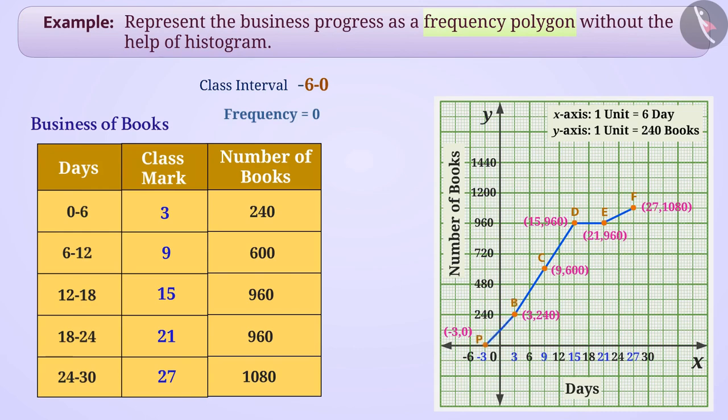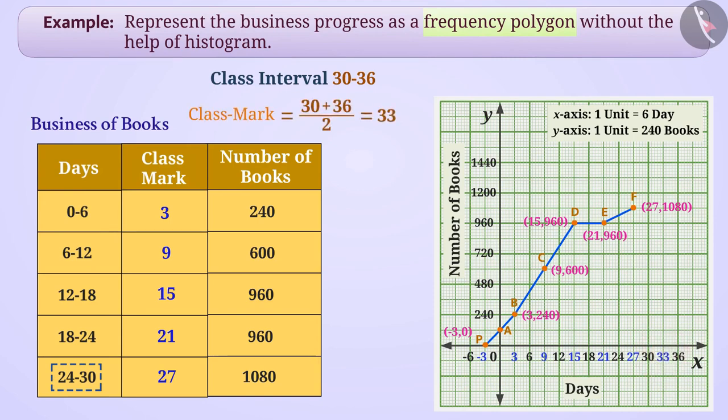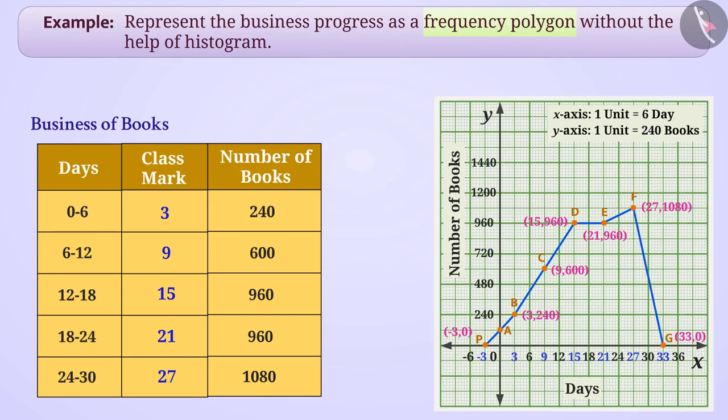This line segment intersects the y-axis at a point which we will call point A. Similarly, suppose that even after the class interval 24 to 30, the class interval with 0 frequency is 30 to 36, whose class mark is 33, which we will represent as G of 33 and 0 on x-axis. Now, we will connect point F and point G by line segment.